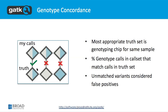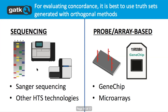For genotype concordance, we're looking for concordance — meaning agreement — with the truth set. Unmatched variants would be considered false positives. To get a good truth set, it's best to use an orthogonal truth set, so maybe a different method of sequencing — probe or array-based. High-throughput sequencing is the highest cost but most accurate. There are other high-throughput sequencing technologies that are a bit cheaper, and array-based is cheaper but can only look at parts of the genome.